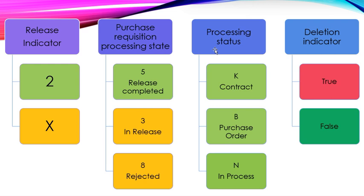If your release indicator is 2 and purchase requisition processing state is 5, then it means your purchase requisition has been approved and processing status will show you either K, B or N.